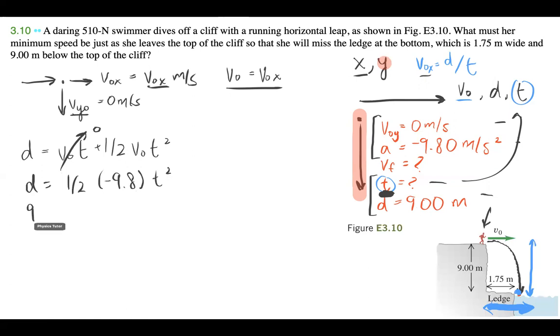The t value that I get is plus minus 1.3556 seconds. So that's the time that I'm getting. So it takes her 1.355 seconds to reach from the top to the bottom.